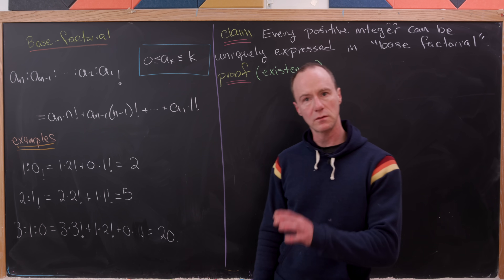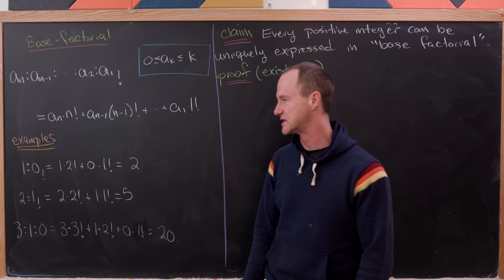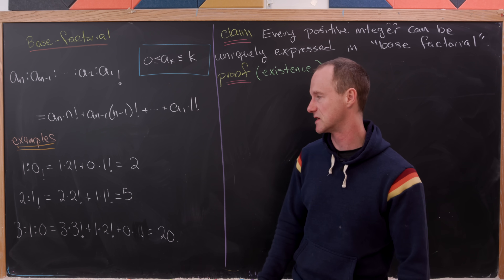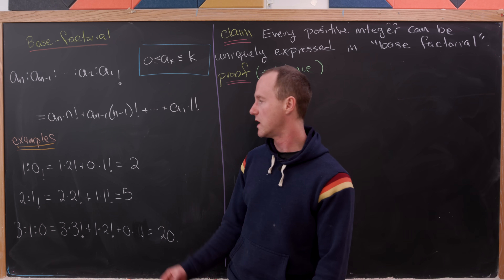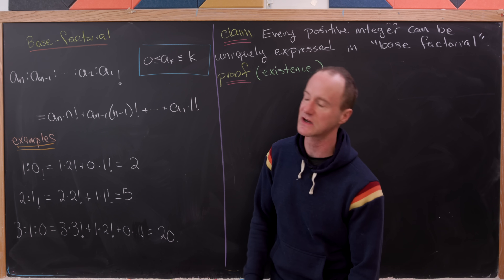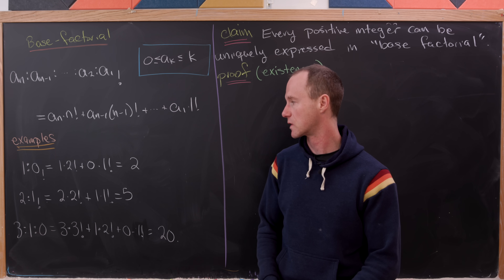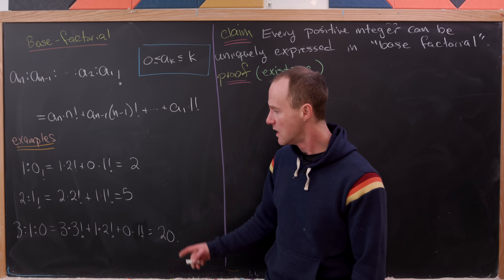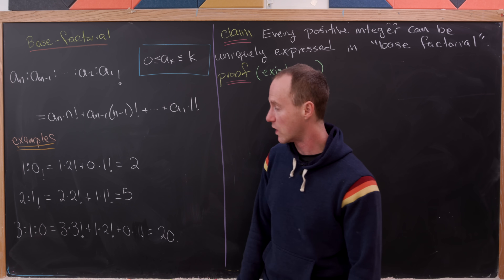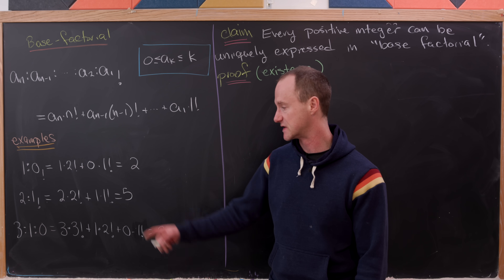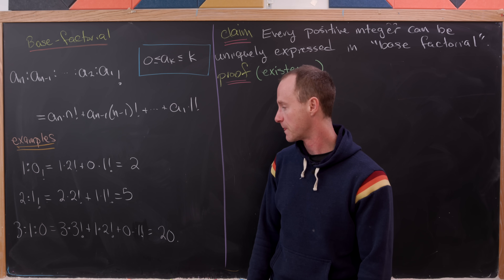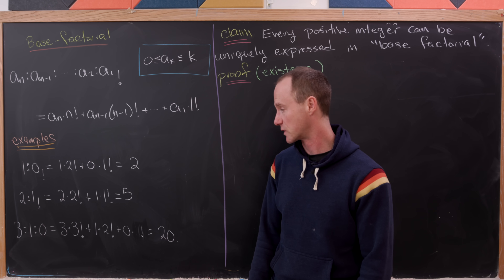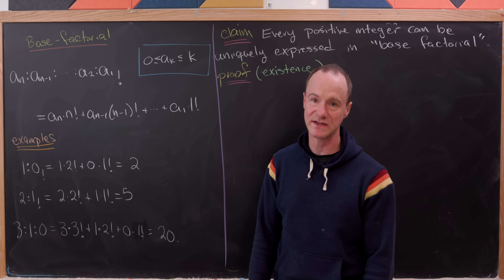Just for some examples, let's notice that 10 in this number system is 1 times 2! plus 0 times 1!, in other words, the number 2. Furthermore, 310 is 3 times 3! plus 1 times 2! plus 0 times 1!, in other words, it is 20.